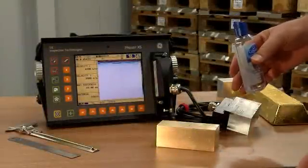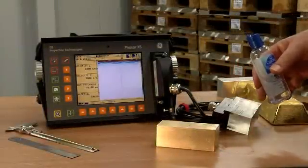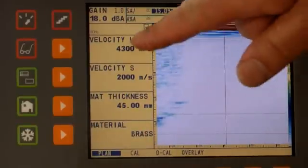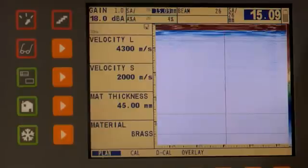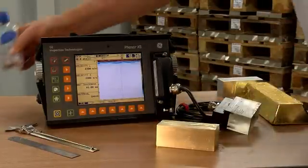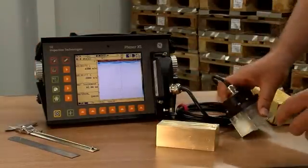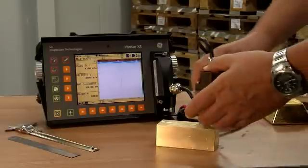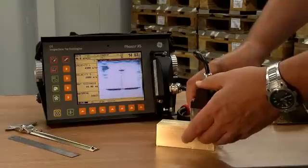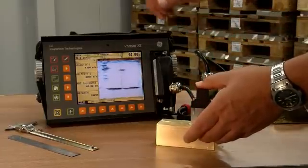We're now going to test a brass sample with the Phaser XS. First thing we have to do is select a different material for the instrument, which has changed the acoustic velocity. We then need to put the couplant on in exactly the same way that we did with the gold bar.